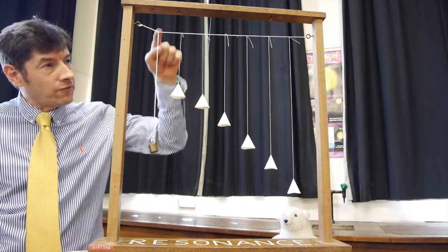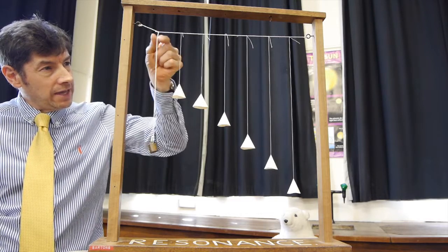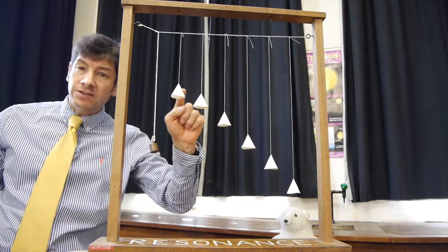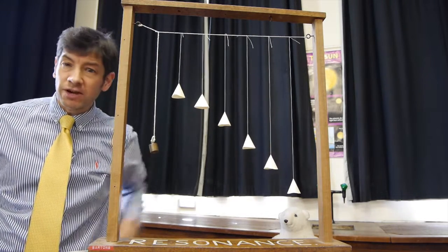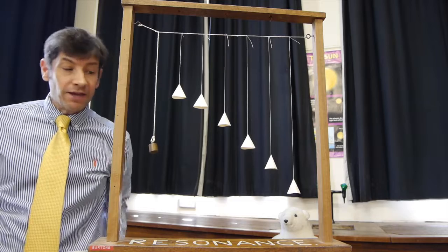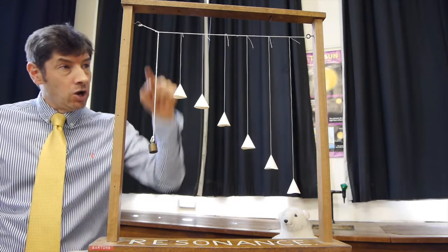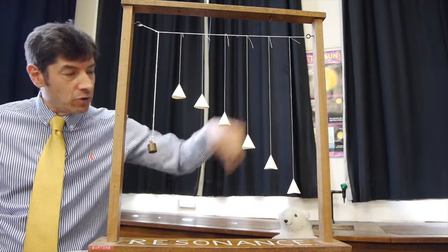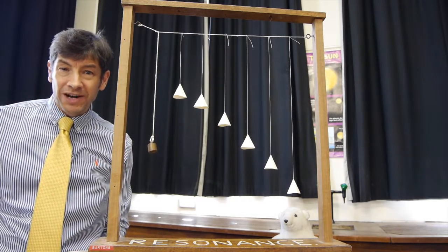And then hanging from that, tied on, is a piece of string with quite a heavy weight on it, and then some paper cones on different length strings. So the important thing is here, we've got a heavy weight hanging off our mini washing line, and a series of other objects hanging off it all of different length.